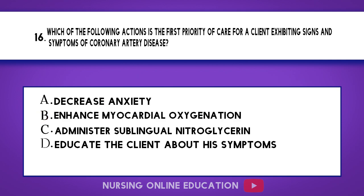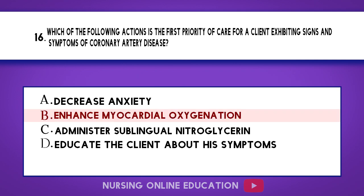Question 16. Which of the following actions is the first priority of care for a client exhibiting signs and symptoms of coronary artery disease? A. Decrease anxiety. B. Enhance myocardial oxygenation. C. Administer sublingual nitroglycerin. D. Educate the client about his symptoms. The answer is option B: Enhance myocardial oxygenation.